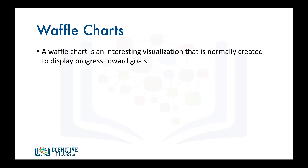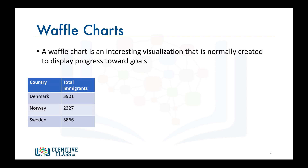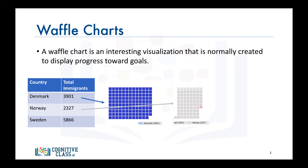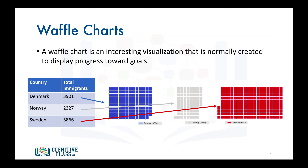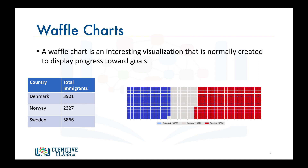For example, say immigration from Scandinavia to Canada is comprised only of immigration from Denmark, Norway, and Sweden, and we're interested in visualizing the contribution of each of these countries to the Scandinavian immigration to Canada. The main idea is that for a given waffle chart whose desired height and width are defined, the contribution of each country is transformed into a number of tiles proportional to the country's contribution to the total. So the more the contribution, the more the tiles, resulting in what resembles a waffle when combined — hence the name waffle chart.